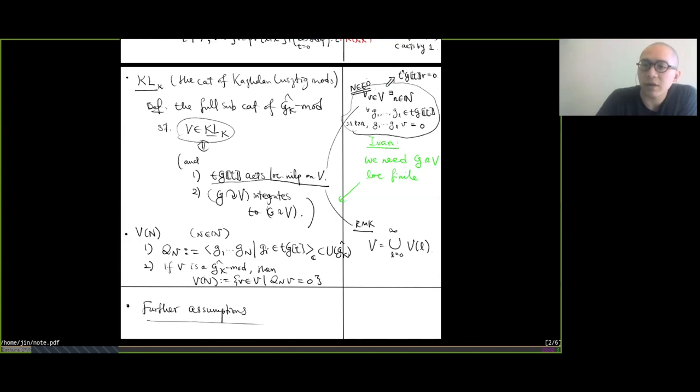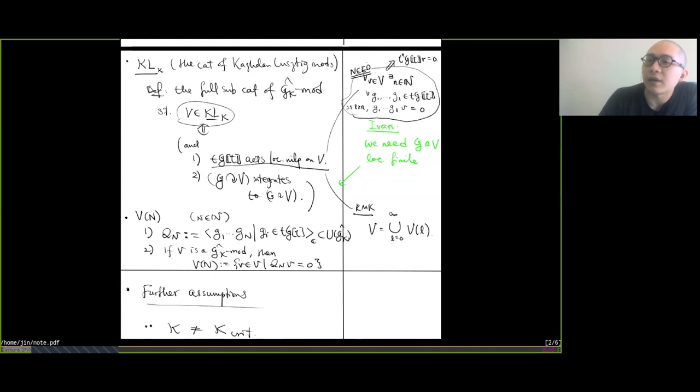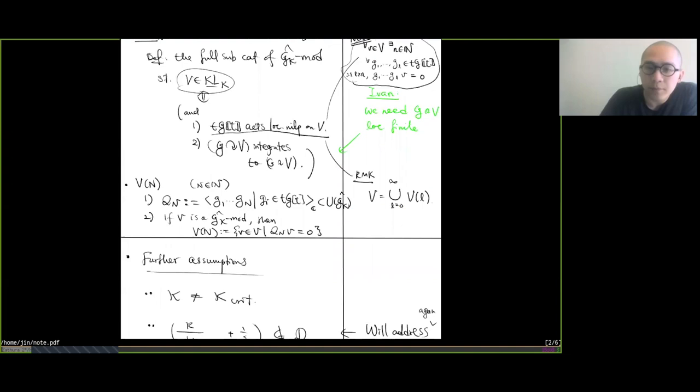To understand this correctly: locally nilpotently means that for each vector v in V, there is some integer n such that if you have more than n monomials, all of them act on v by zero. In particular, this implies that t^n · x acts on v by zero for everything whose degree is larger or equal to n.